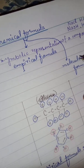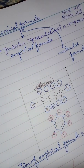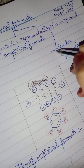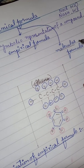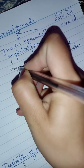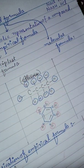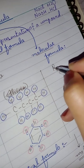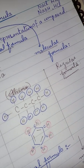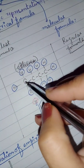A chemical formula is of two types: the empirical formula and the molecular formula. The empirical formula is also known as the simplest formula, and the molecular formula is also known as the regular formula.